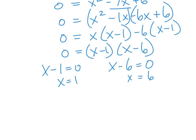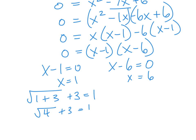Substituting x equals 1 into the original equation: the square root of 1 plus 3 plus 3 equals 1. That gives the square root of 4 plus 3 equals 1, which is 2 plus 3 equals 1. This is false, so x equals 1 is not a solution to this radical equation.